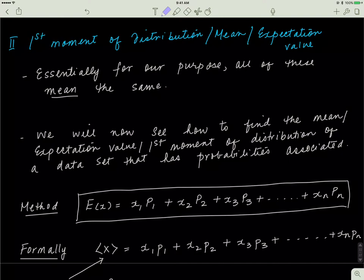Now we'll discuss something called moments in statistics. There are different types of moments in statistics. Really, what the word moment means is average — it's a fancy way in statistics to mean average. So the first moment of distribution is just the simple mean of some data. The first moment of distribution means mean, which means expectation value. They all mean the same thing.